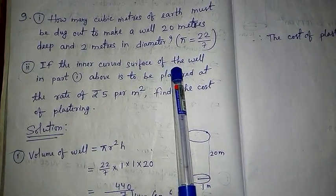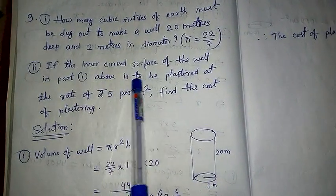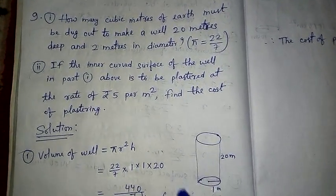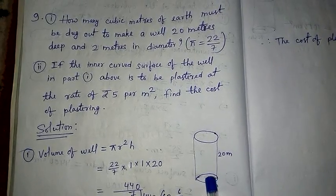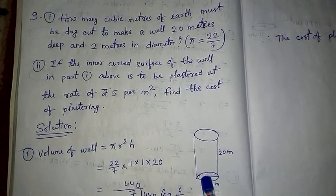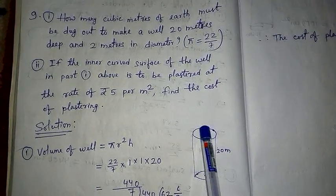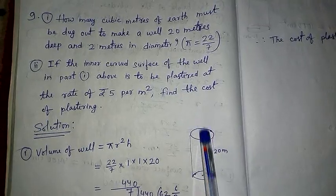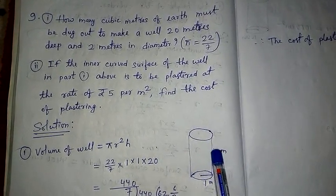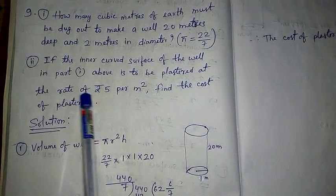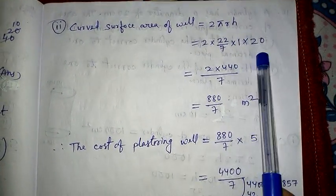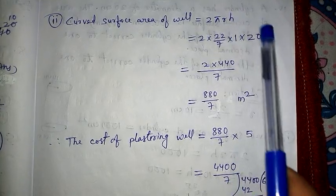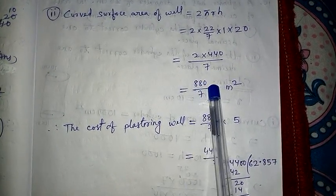Now the second part: the inner curved surface of the well is to be plastered. The upper portion is open and the lower base also will not be plastered — in a well people take out water from the top, so only the wall is plastered. That means we need the curved surface area. The rate of plastering is 5 rupees per meter square. Curved surface area = 2πrh = 2 × (22/7) × 1 × 20 = 880/7.